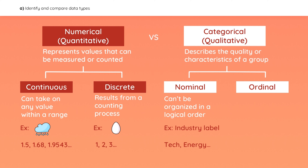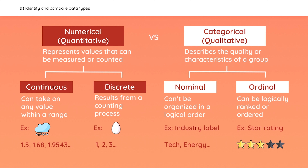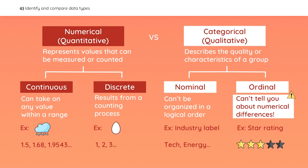Ordinal data, on the other hand, can be logically ordered and ranked. For example, the number of stars used to rate a fund's performance can range from one star, which indicates poor performance, to five stars for the best performing funds. However, ordinal data doesn't tell you anything about the numerical differences between categories.